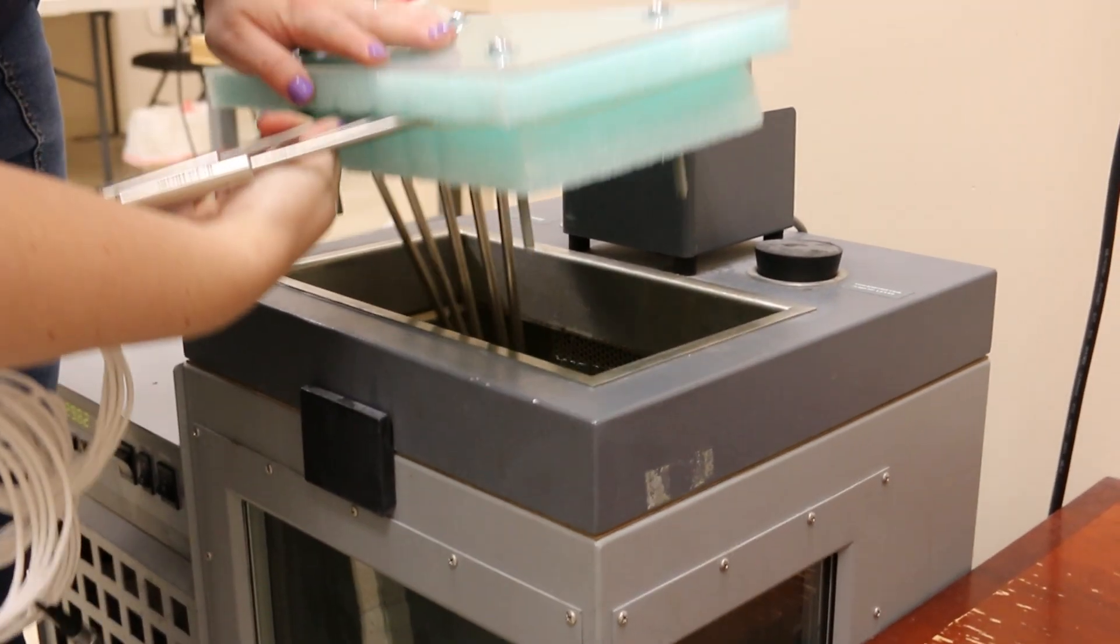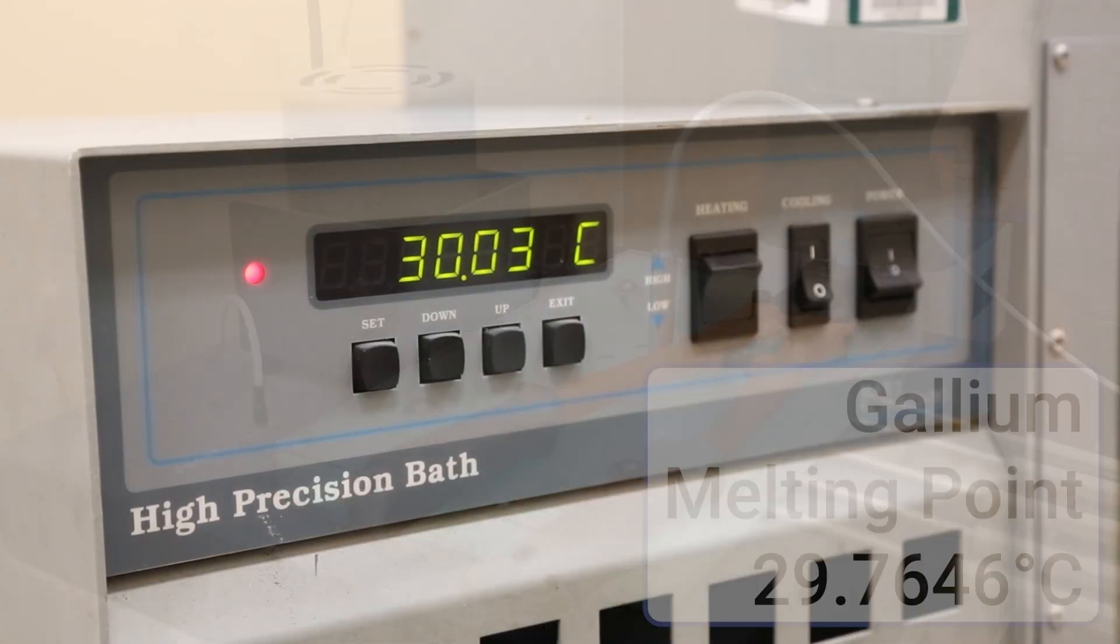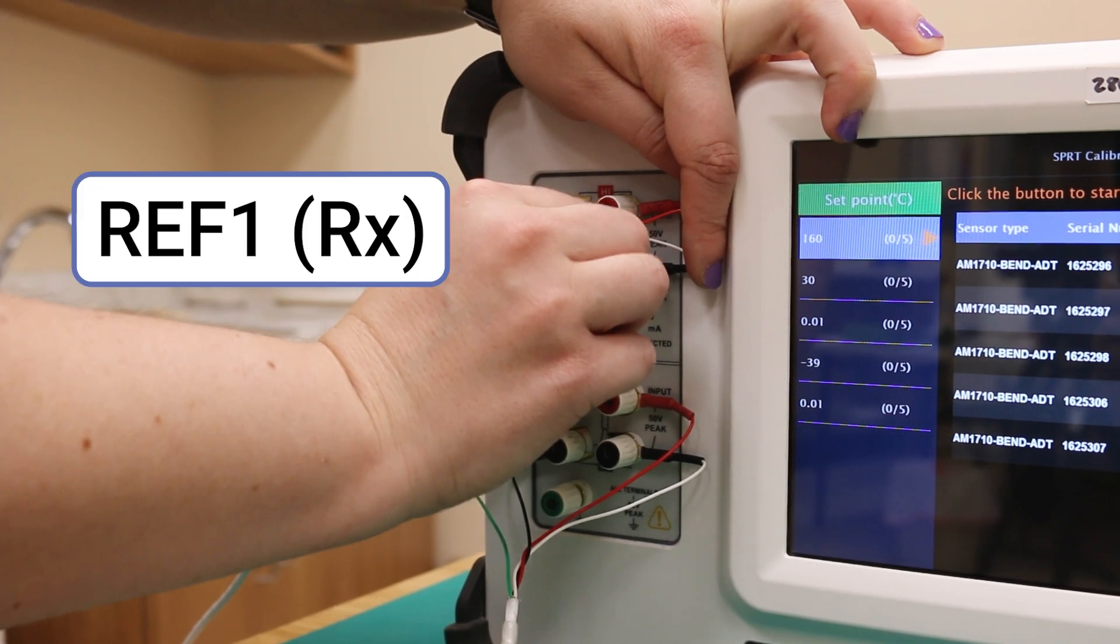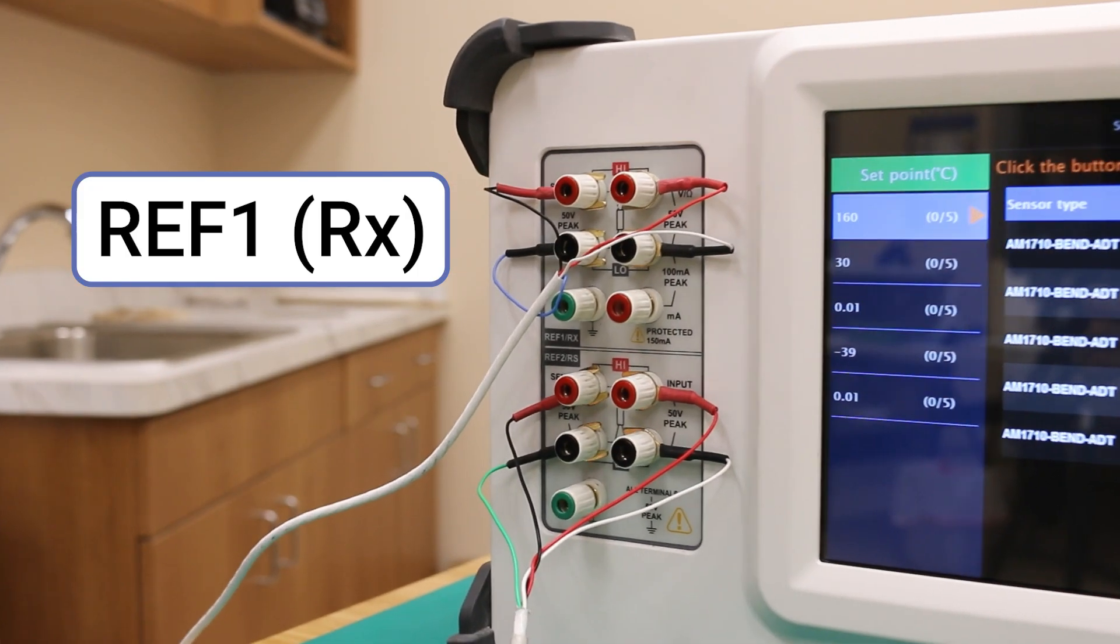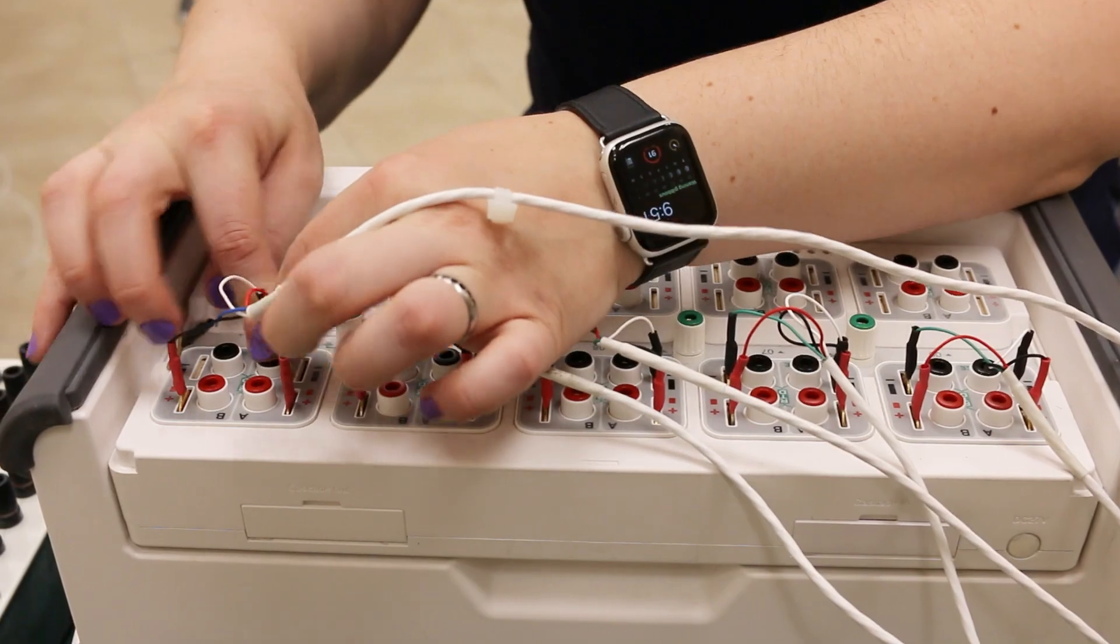Now we will add the DUTs and reference probe to the first bath. This bath is held at 30 degrees Celsius as a comparison point for the melting point of gallium. The reference probe will be attached to REF1 on the front of the 286. The DUT cables will be attached to ports 1-5 on the top of the device.